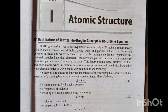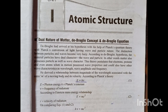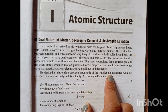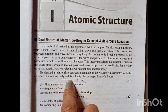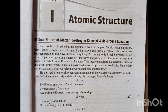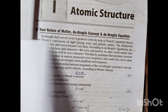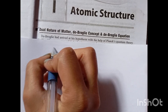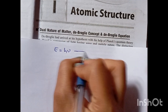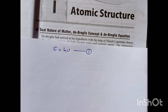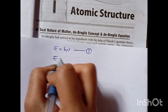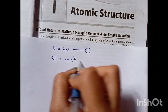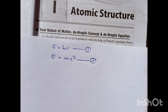De Broglie derived a relationship between the magnitude of wavelength associated with a mass moving at a velocity. He explained a relationship between mass and velocity. According to Planck's equation, E = hν, and Einstein's mass-energy relationship E = mc². These two equations are combined to derive a new equation.